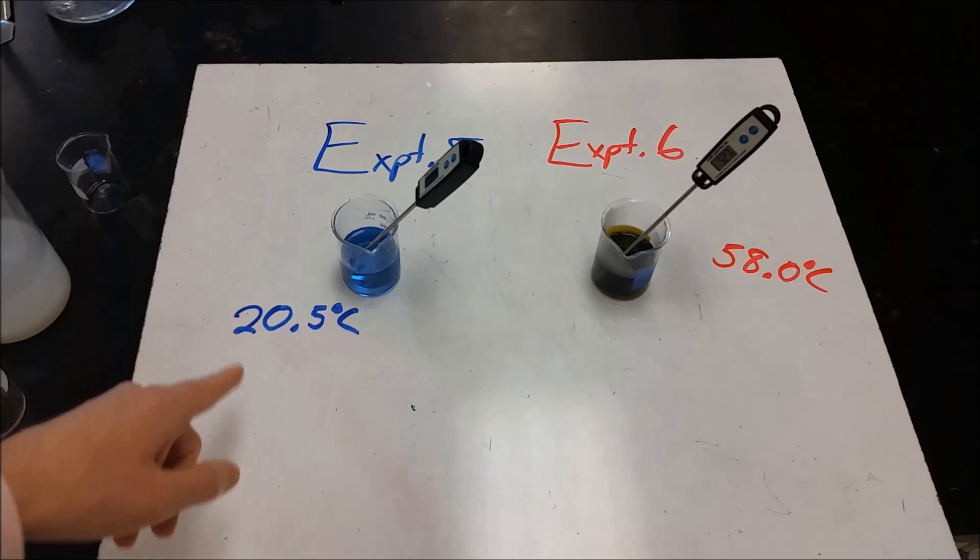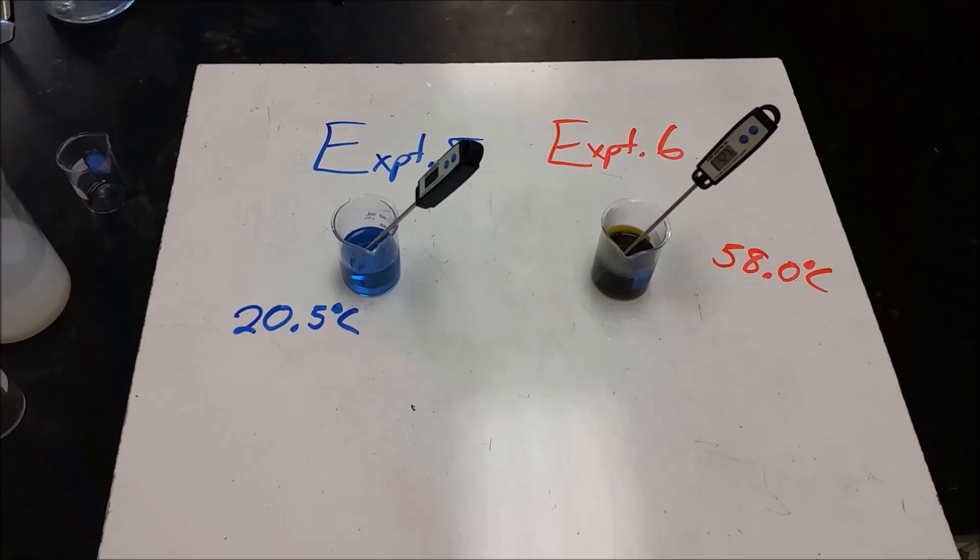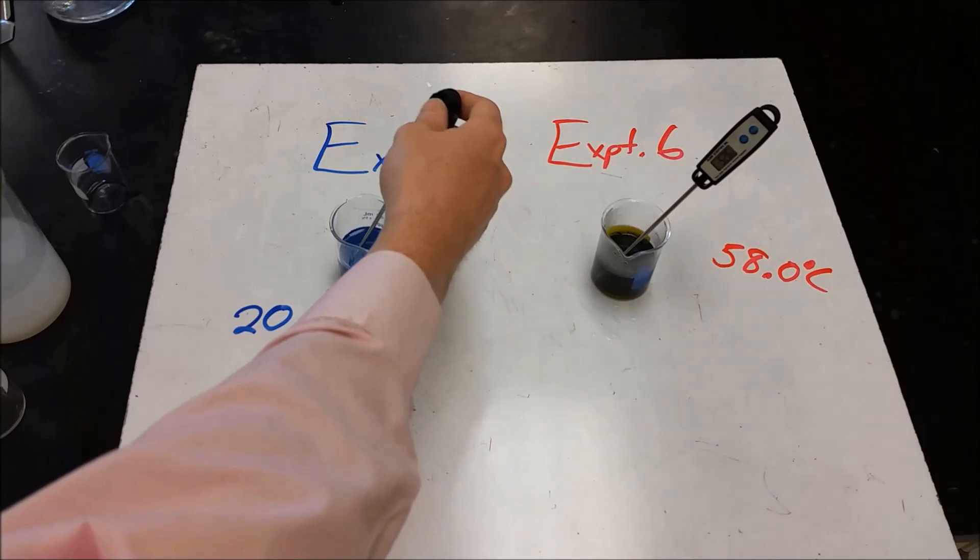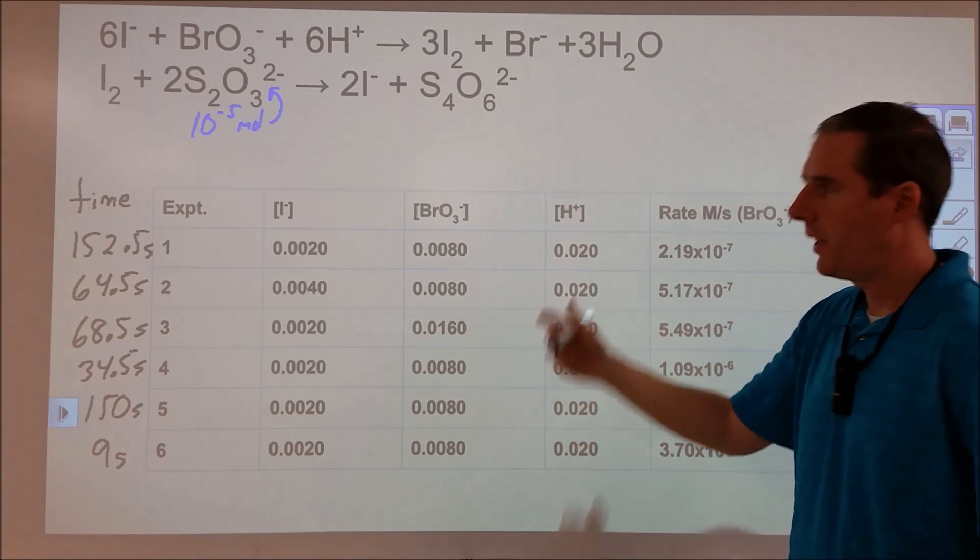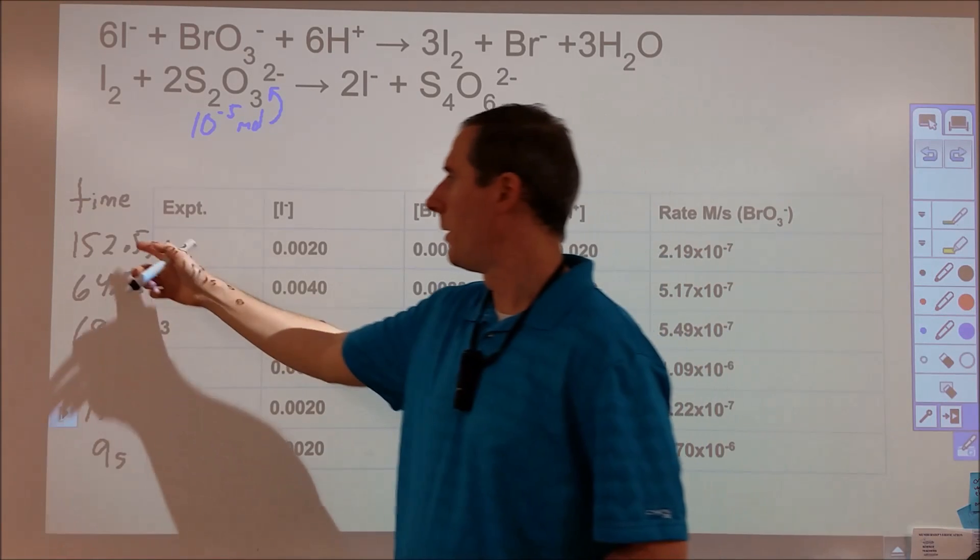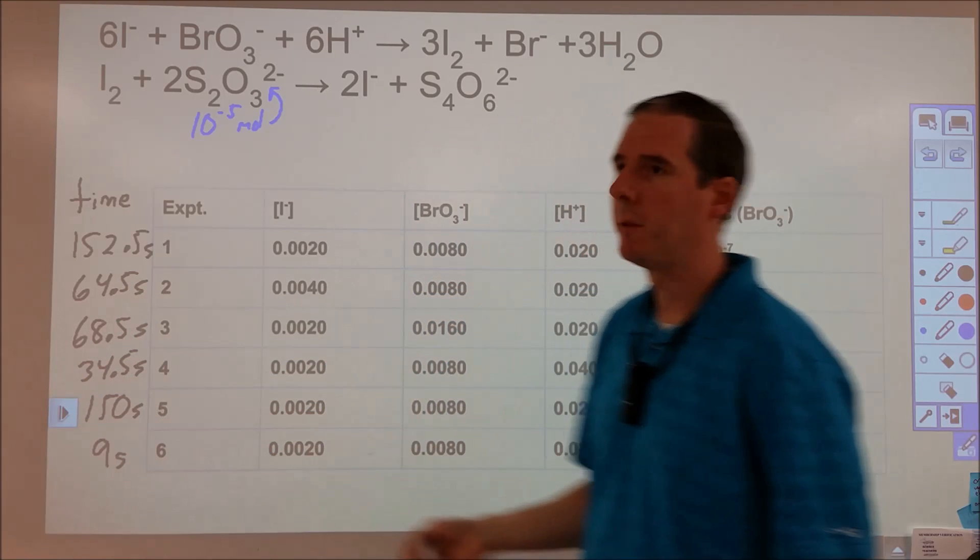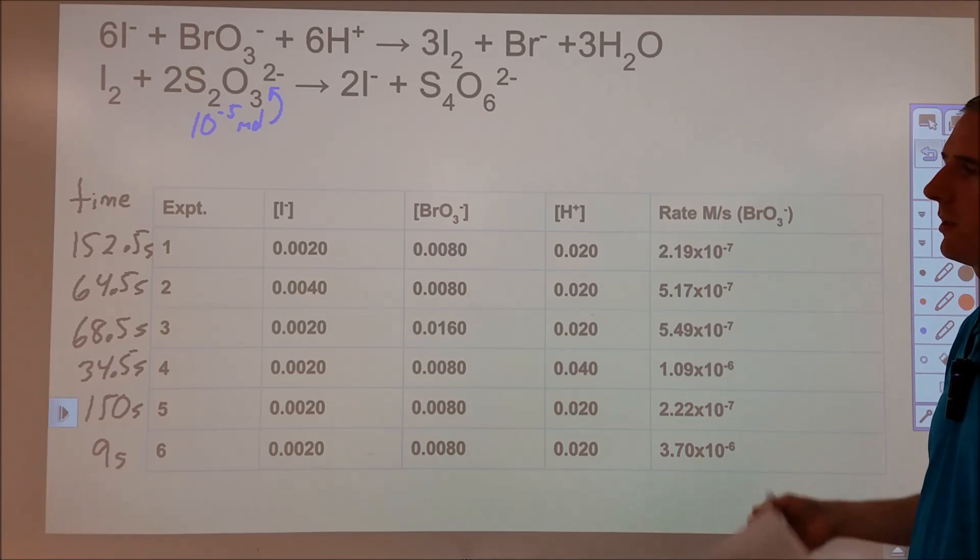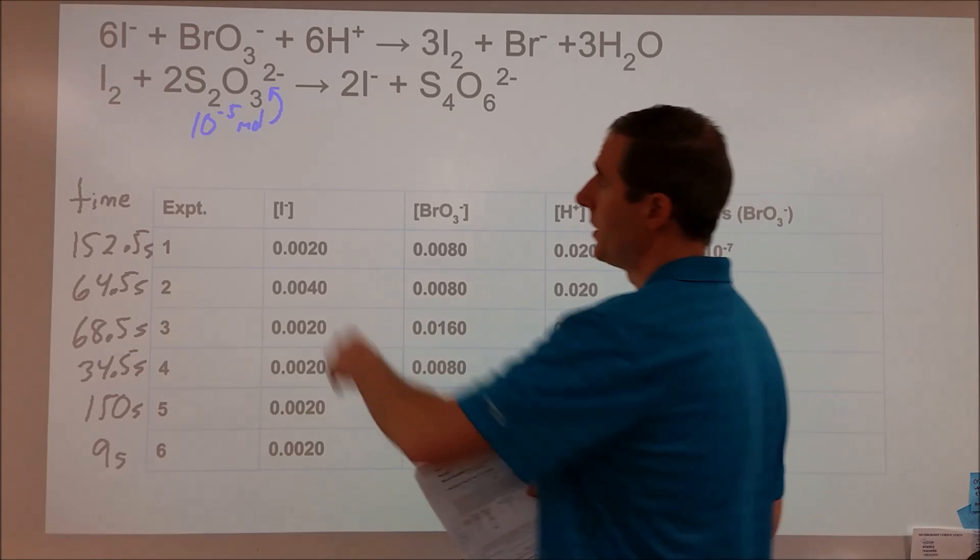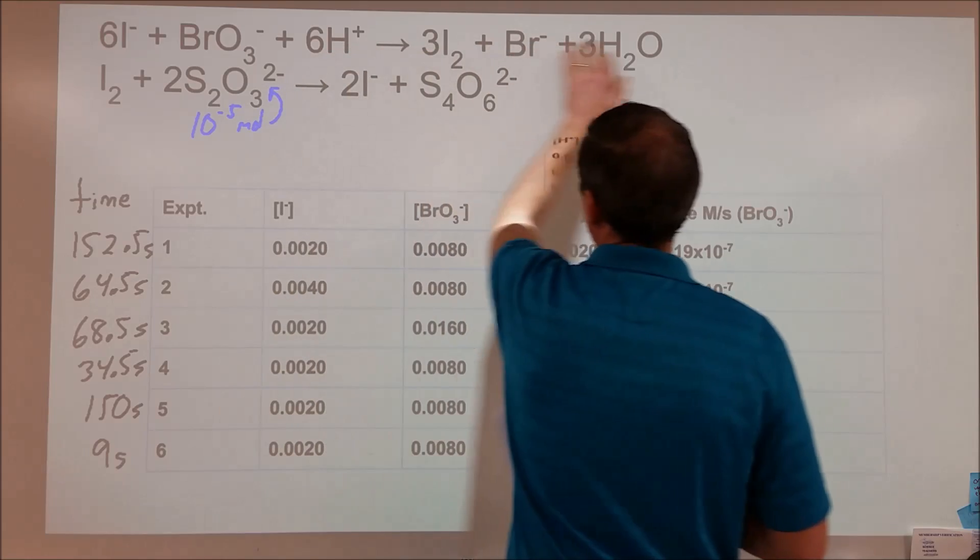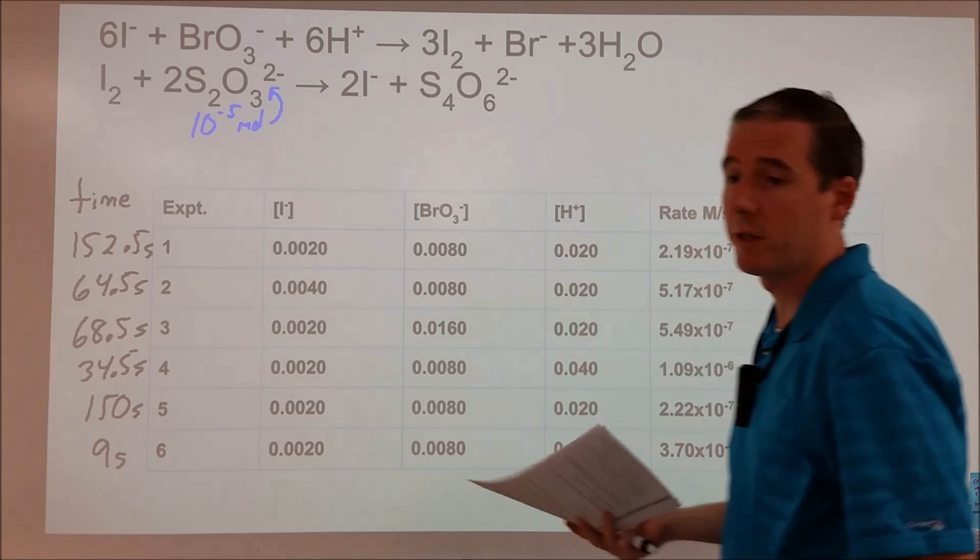And now we're getting our blue color here and still at 20.5 degrees. So from that, we can actually figure out the activation energy for this particular reaction. Now going through our data, we've got six experiments we've run. Here are the times that I took from the video on how long each one took from when they were mixed until when we saw the blue color. So what's going on in this experiment is that this reaction is going on the minute you start to mix the two things.